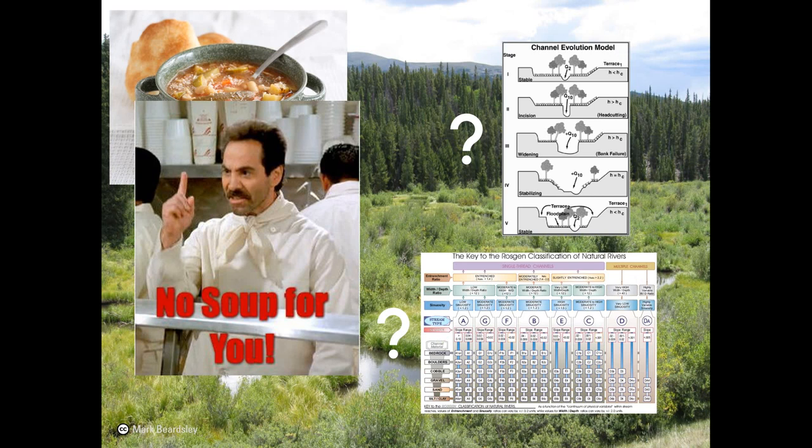A generation of us learned to think of these complex riverscapes as unstable or out of balance. We wrote them off as anomalies. And this became a huge source of conflict in the river restoration community, especially for practitioners like me and my friends who just couldn't ignore naturally complex, biologically rich riverscapes. So we appealed to higher powers and begged to get soup back on the menu.